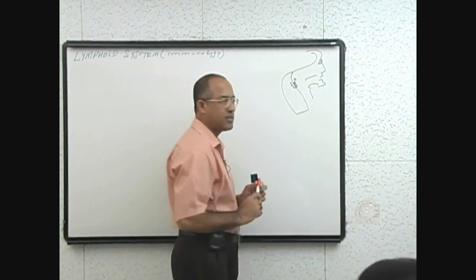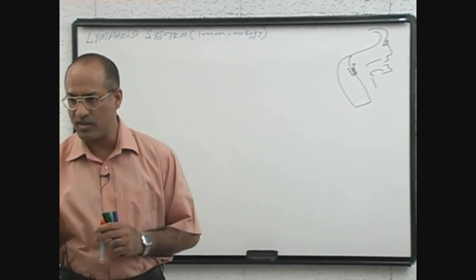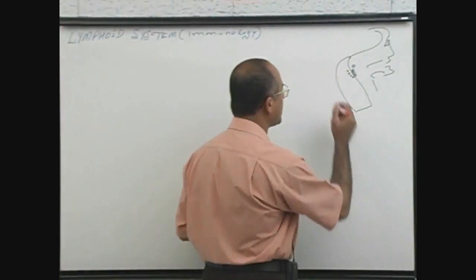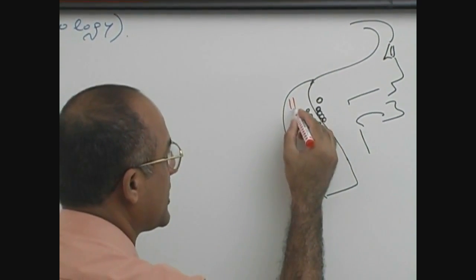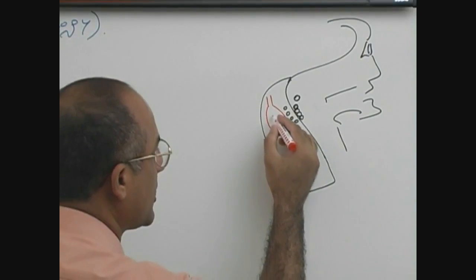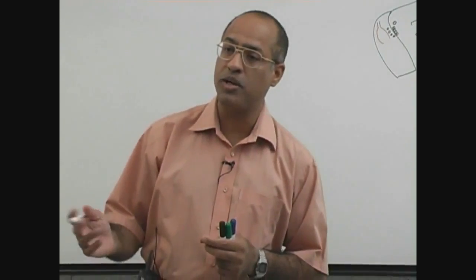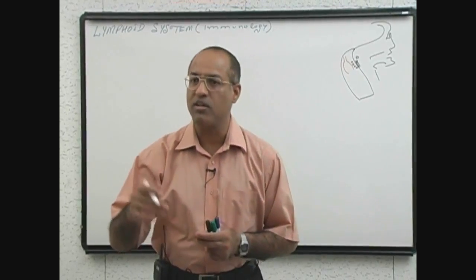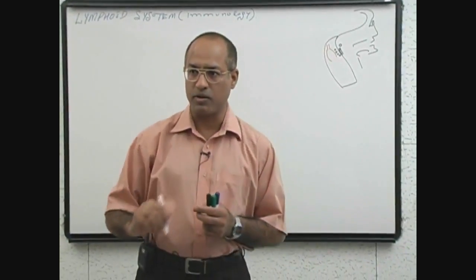Whenever tissue is damaged, we say there is an inflammatory response. Whenever vascular tissue is injured, there is an inflammatory response. During that inflammatory response, blood vessels dilate — especially the arterioles going to this area — so blood flow to this area will increase. That increased blood flow should bring more neutrophils, more macrophages, more lymphocytes, more antibodies, and more other components of the blood which can fight with the microbe.